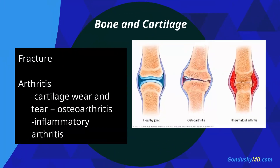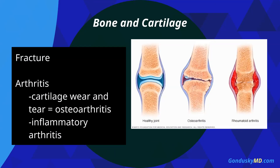From a bony and cartilage standpoint, you can fall and break bones — that occurs with significant traumatic forces. Otherwise, we're mostly talking about arthritis. Cartilage wear and tear is called osteoarthritis, and inflammatory arthritis — such as rheumatoid arthritis — can cause inflammation in the joint and destroy the cartilage. Osteoarthritis is the most common type; it's wear-and-tear arthritis that gradually destroys the cartilage in the joint over time.